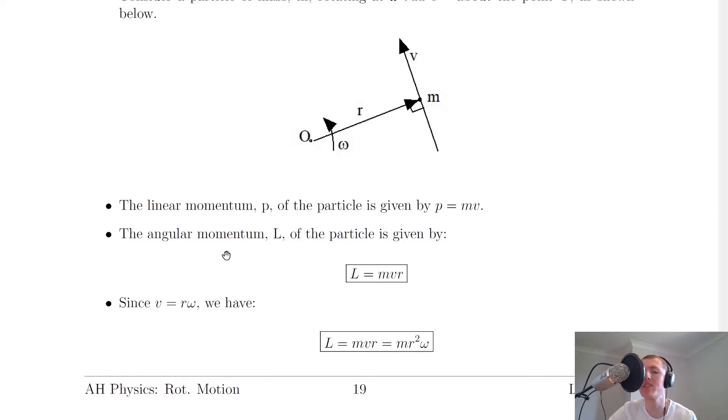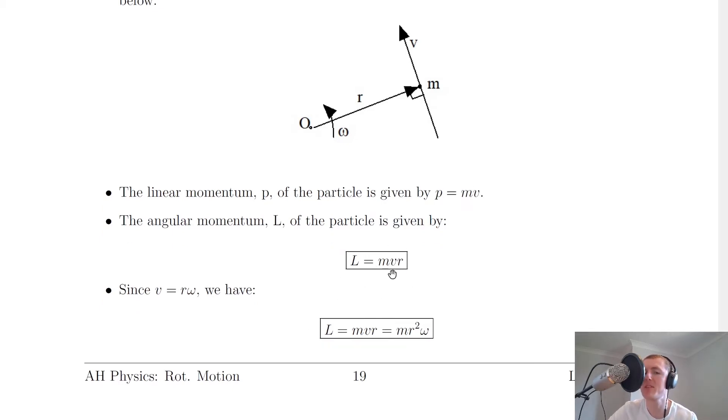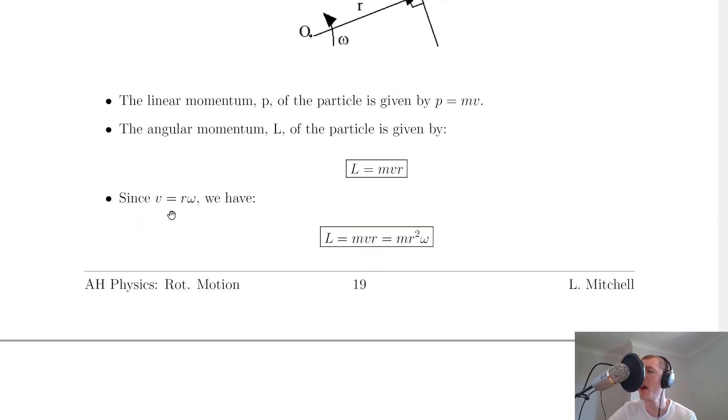Now the angular momentum, which is given the symbol capital L of the particle, can be given by L equals mvr. So that is basically our linear momentum mass times velocity, the mv, times the distance r from the axis of rotation. And since we have an expression for v for rotational motion, we can say that v equals r omega. So we have that L equals mvr is equal to mr squared omega, and that's just substituting in r omega for the v there.